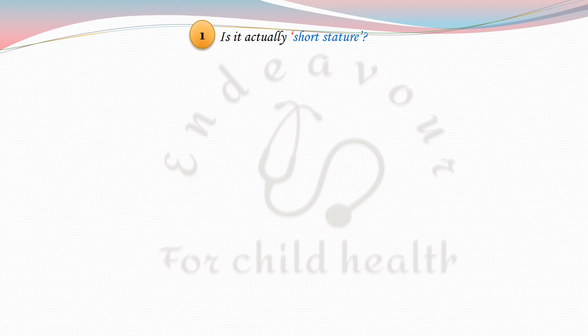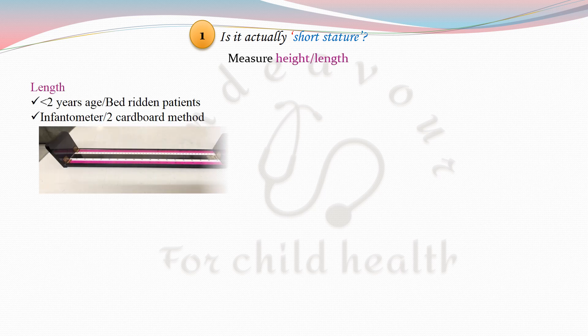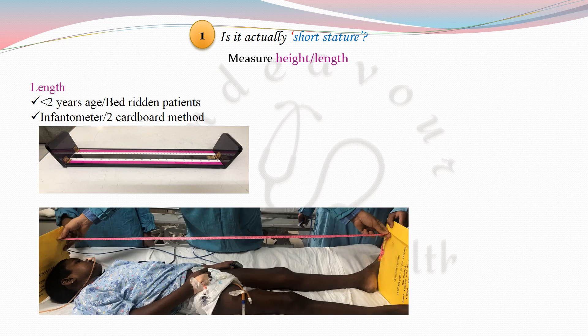If parents come to you complaining that their child is short, the first thing you must do is find out if the child actually has short stature. For this, we measure height or length. Length is measured in children less than 2 years of age or in bedridden patients, with the help of an infantometer or by the two-cardboard method, as demonstrated in the picture below.